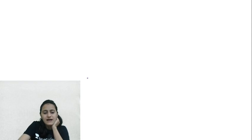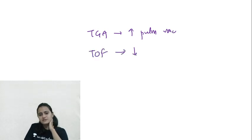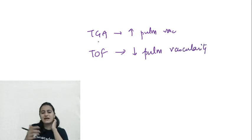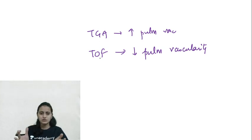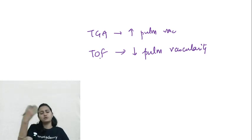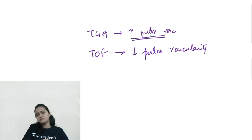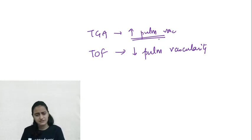Statement 6: pulmonary oligemia is seen in TGA - this is FALSE. TGA shows increased pulmonary vascularity, because associated ASDs or VSDs send more blood to the lungs. Tetralogy of Fallot shows decreased pulmonary vascularity due to pulmonary stenosis. Remember: TGA = increased pulmonary vascularity; TOF = decreased pulmonary vascularity.